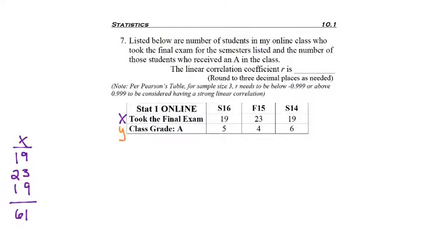Identify my Y column. Of the students who took the final, which of those received an A in the class? I'm going to create a Y column going down vertically and total the 5, 4 and 6 to get 15.